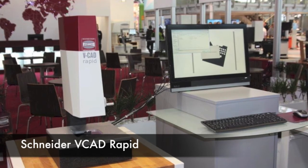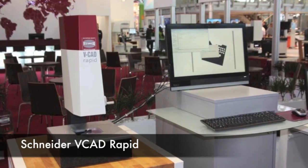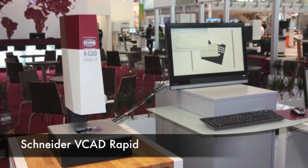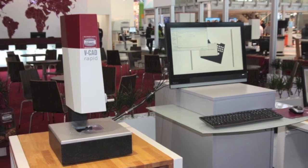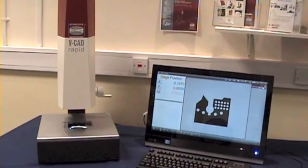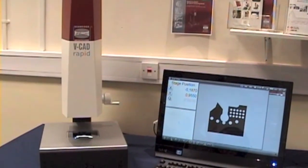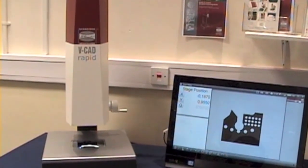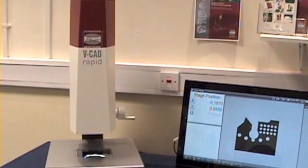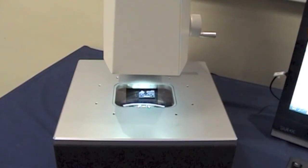This is a Snyder vCAD rapid. The V stands for video, CAD for computer-aided design, and rapid because it's so quick. Shadow graphs have been used for many decades. This instrument represents the next generation. The vCAD rapid is a digital camera system.